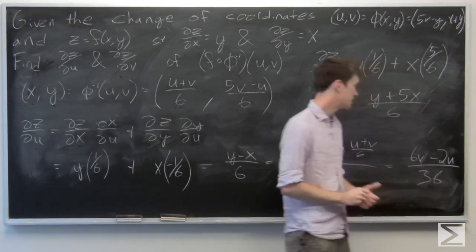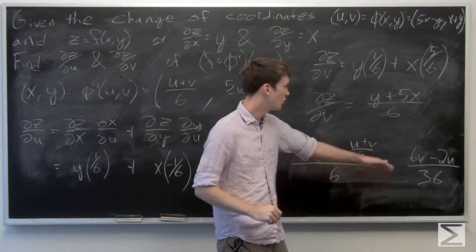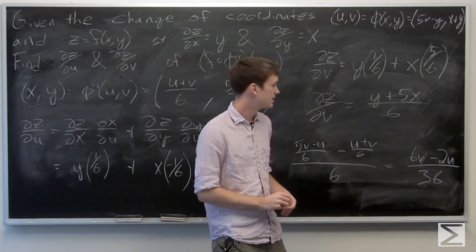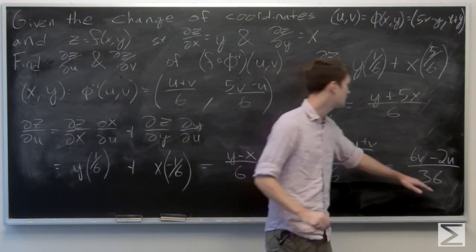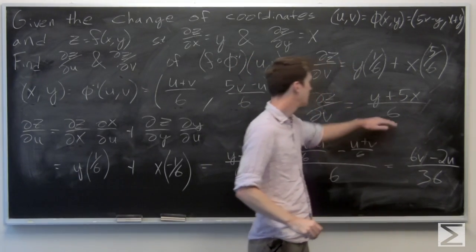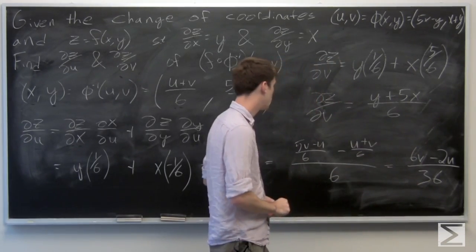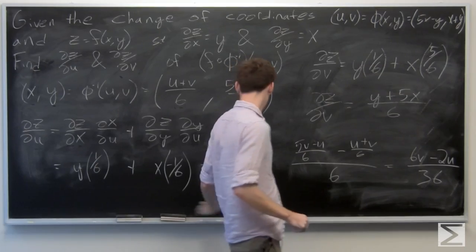We can simplify a little bit. For the partial derivative of z with respect to u, we get (6v minus 2u) over 36. And we can do the same substitution for the partial derivative of z with respect to v.